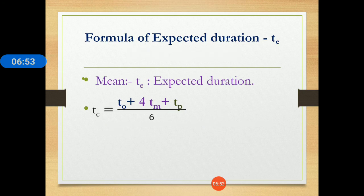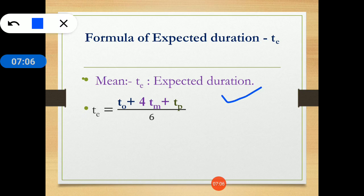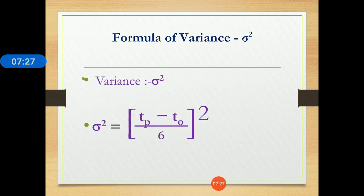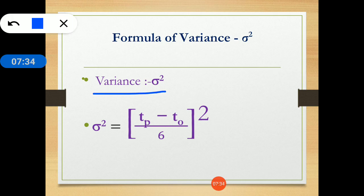You need to memorize two formulas for the PERT method. First, calculate the mean time or expected duration TE using the equation: TE = (TO + 4·TM + TP) / 6. This gives you the expected duration. Second, variance sigma-squared is calculated as: σ² = ((TP − TO) / 6)². This equation gives you the variance.